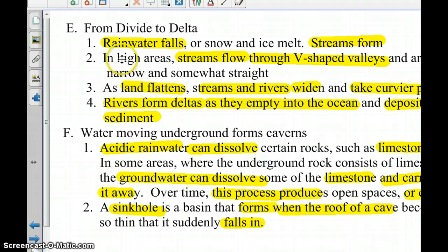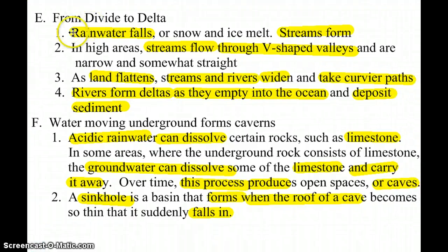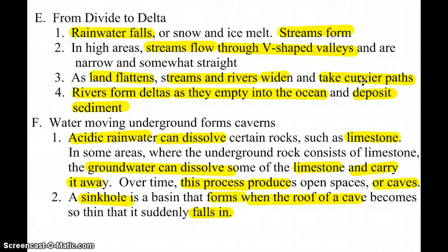Here's a step-by-step look at what water does from the time it falls to the time it drops off at the end of the river. When rain falls, streams form and flow downhill through V-shaped valleys. At the bottom the land flattens out, streams get wide and take a curvier path — that's where meandering and oxbow lakes occur. At the end of the river a delta forms because the river can no longer carry its sediment and drops it off.